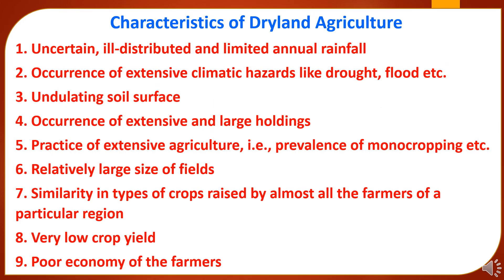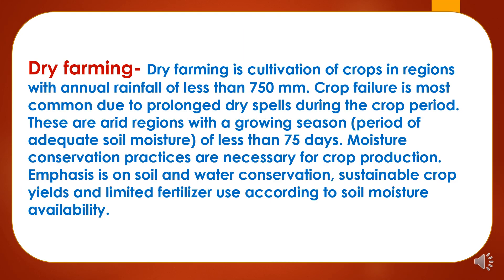Now we will study the characteristics of dryland agriculture. It can be characterized by: uncertain, variable, and limited rainfall; occurrence of extensive climatic hazards like drought and flood; undulating soil surface; occurrence of extensive large holdings; practice of extensive agriculture like prevalence of mono-cropping; relatively large size of fields; similarity in types of crops raised by almost all farmers of a particular region; very low crop yield; and poor economy of the farmers.